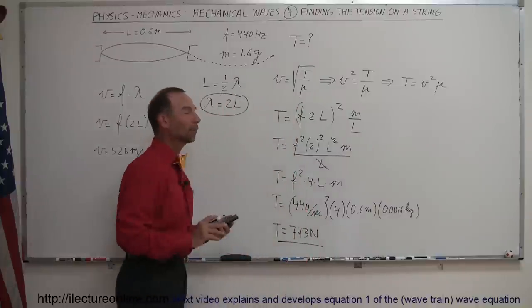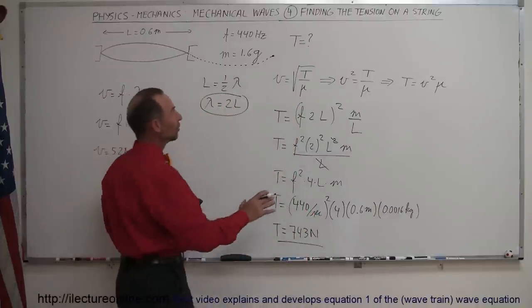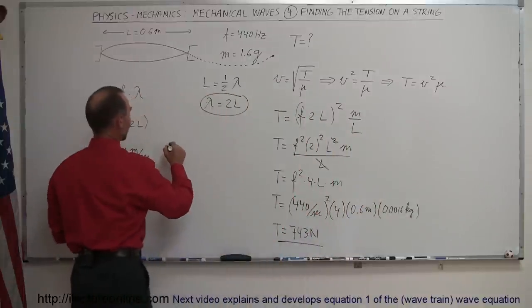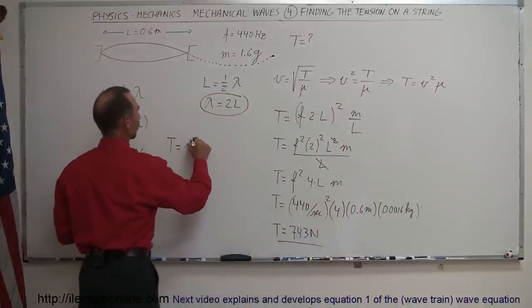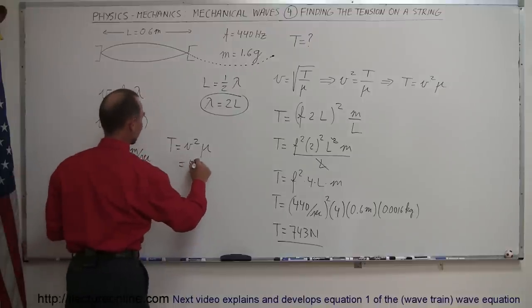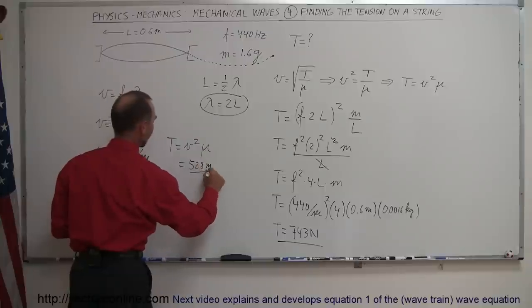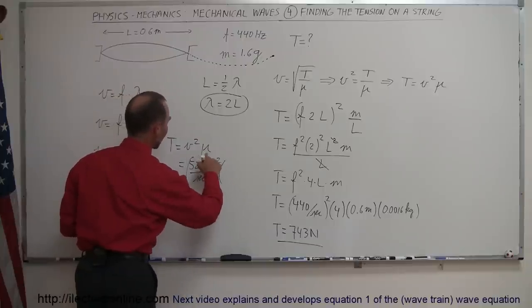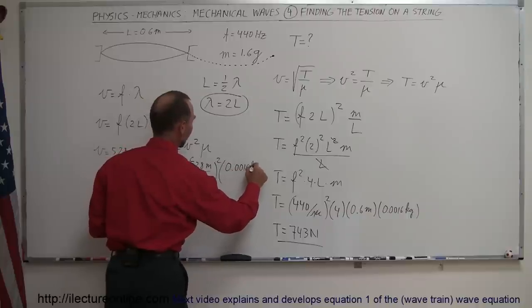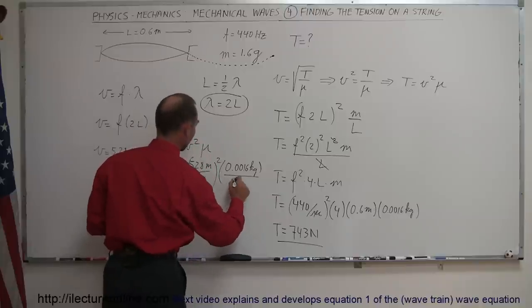Now let's see if we can get the same result by using this form of the equation and this result right here. So we have T is equal to v squared times mu. We got the velocity here which is 528 meters per second. We have to square that and multiply times the mass per unit length, so we have 0.0016 kilograms divided by the length which was 0.6 meters.